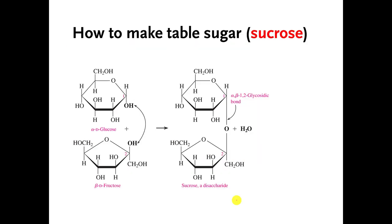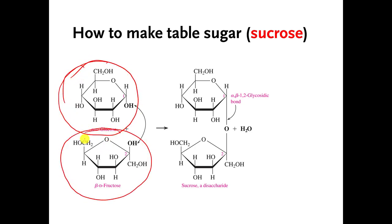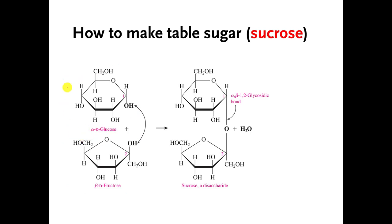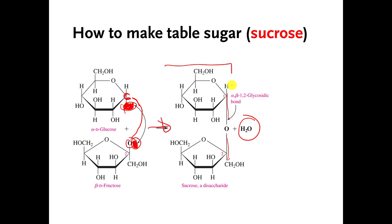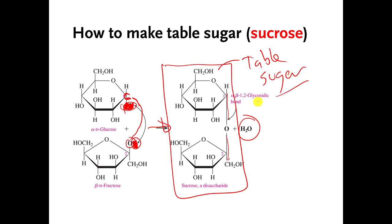Here's just another example of dehydration synthesis. If you take glucose and another monosaccharide called fructose and want to connect them, one way is to rip out this OH and rip out this H — then this carbon is missing an attachment and this oxygen is missing an attachment, so we connect them to each other. We made water because we ripped out an OH and an H, and now we have a bigger molecule. And this is table sugar — the stuff you and I put in our coffee. That's another example of dehydration synthesis.